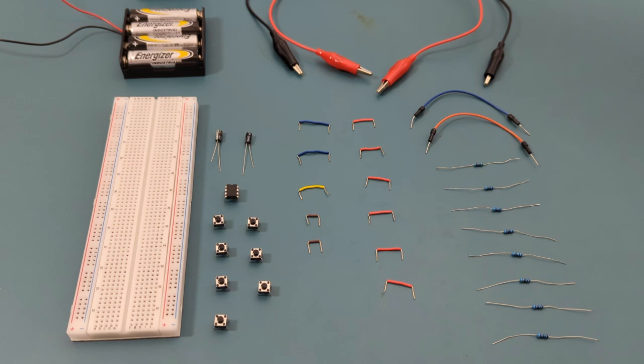Here are all the components you need to set up this circuit: two alligator clips, thirteen jumper wires, one 5000 ohms resistor, seven 1000 ohm resistors, one 0.1 microfarad capacitor, one 10 microfarad capacitor, one 555 timer IC, seven latch switches, four AA batteries for the power source, and a breadboard to connect everything together.